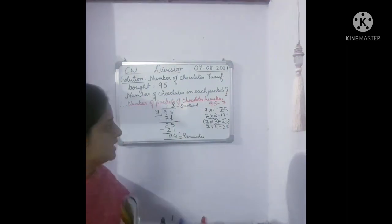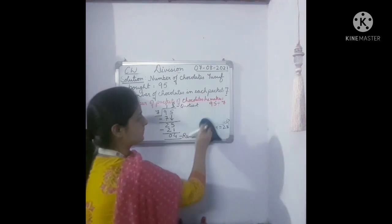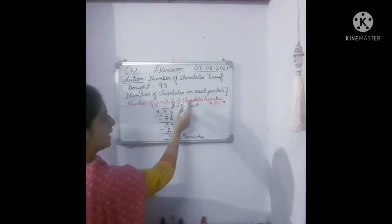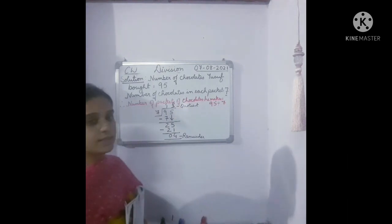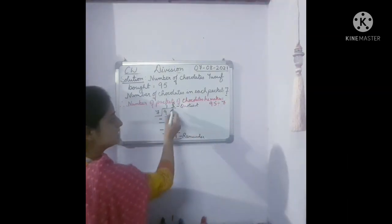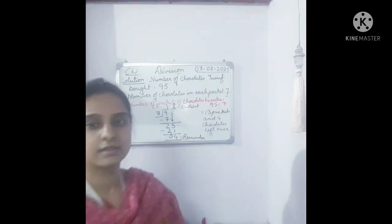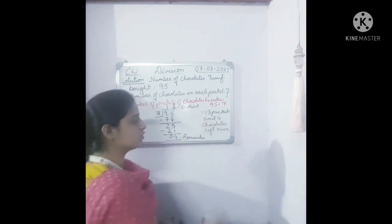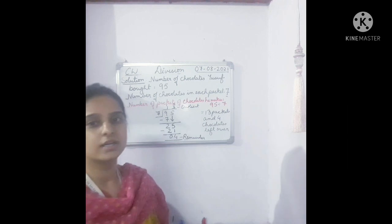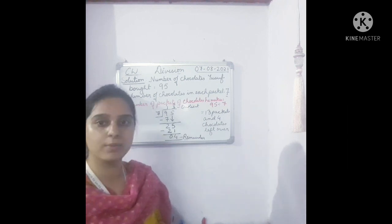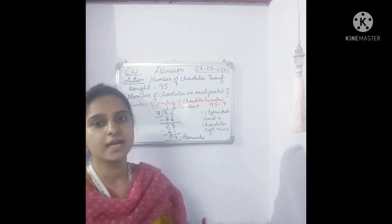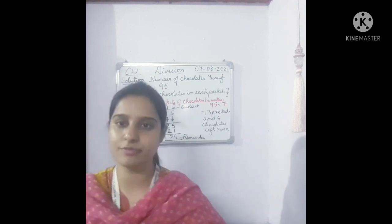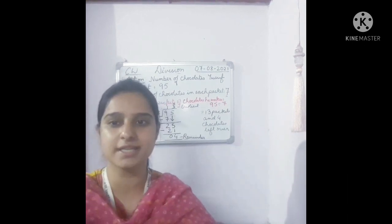Now let's write the answer. Number of packets of chocolates he makes: 13 packets, and 4 chocolates are left over. So this is our word problem — we have solved it. Practice at home and note this down in your notebook. That's all for today. Thank you so much. Have a good day.